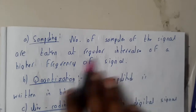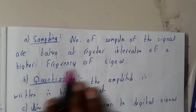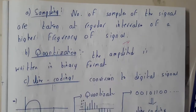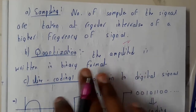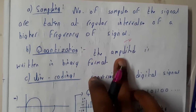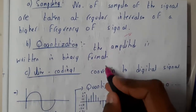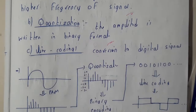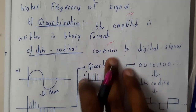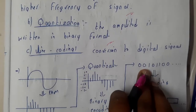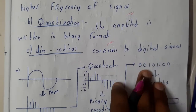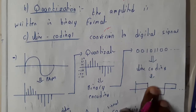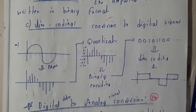Sampling is where a number of samples of the signal are taken at regular intervals of time at a high frequency. Quantization is where we start assigning numbers and converting the amplitude into binary format. Line coding is the step we have discussed previously, where we convert the digital code into a digital signal. After line coding, we get the final digital signal.